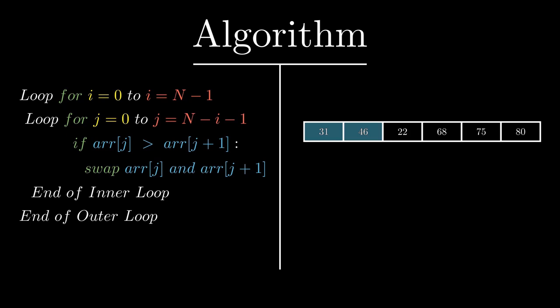31 is less than 46, so we don't need to swap. Then 46 is greater than 22, so we swap. Then 46 is less than 68, so we don't need to swap, and 68 is less than 75 so we leave it as it is. We are done with pass 2.